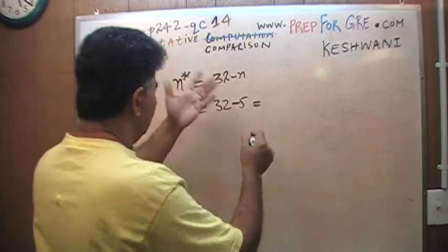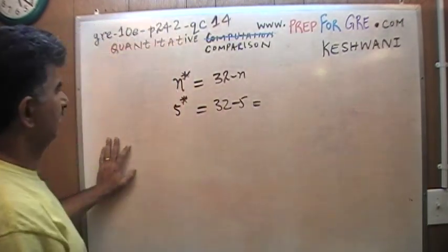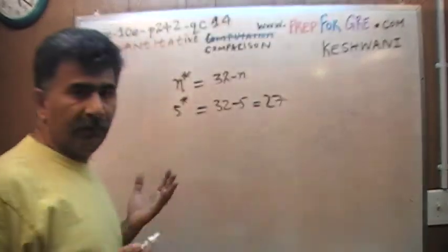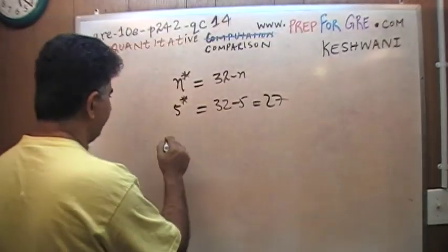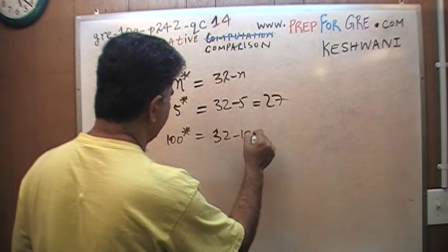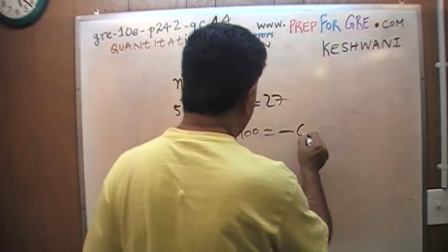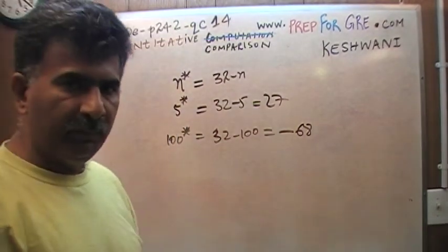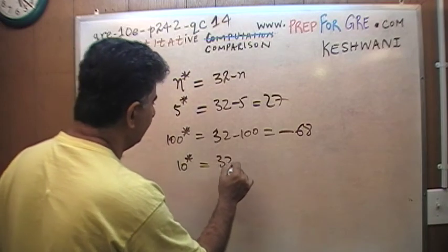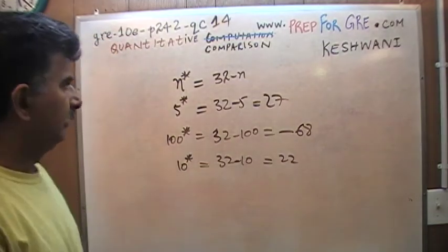So 5★ equals — let's see — 27. For example, let's do another example: 100★ would be 32 minus 100. Now we'll get a negative number; it will be negative 68. 10★ would be 32 minus 10, which is 22, and so on and so forth. That's what it is.